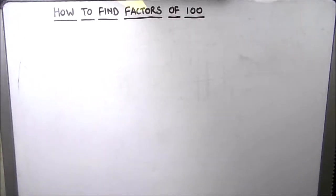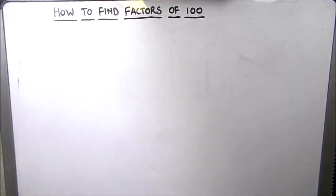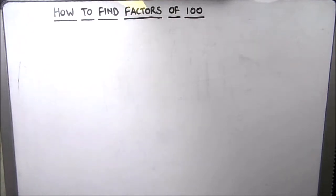Hello everyone. Today in this video we are going to learn how to find factors of 100. There are two methods for finding factors of any number: one is the division method and the other one is the multiplication method. In this video we will be using the division method for finding the factors of 100.